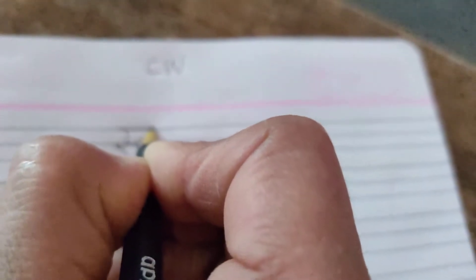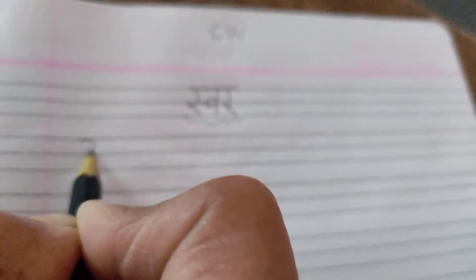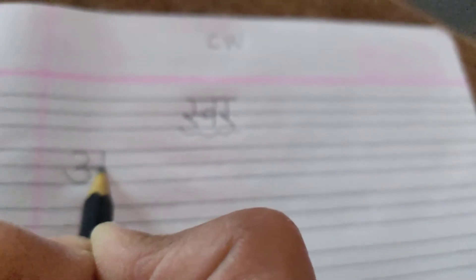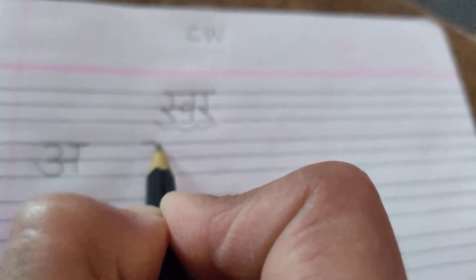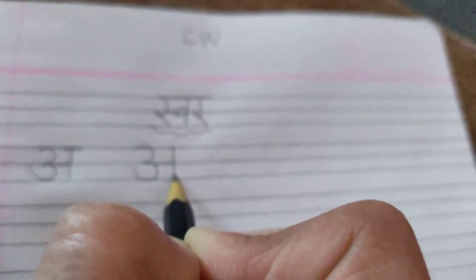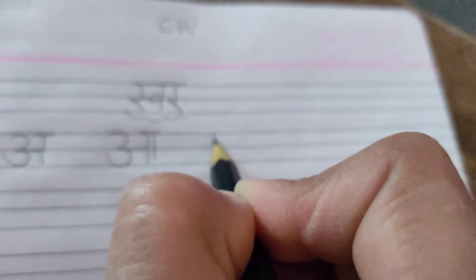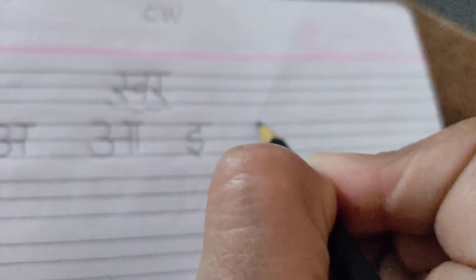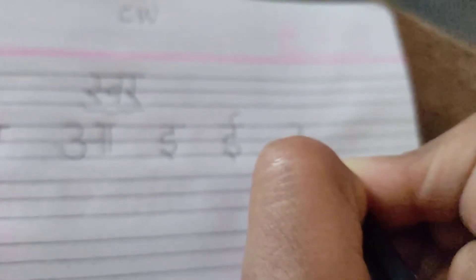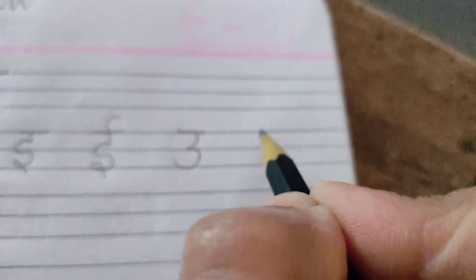Data also you write down. In first line you write down the heading SWAR. This is SWAR heading. First you write down all SWAR. A, A say ANA, A say AM. E, E say EMILY, E, E say EAT. O, O say ULOO, O.